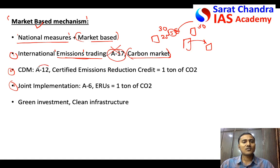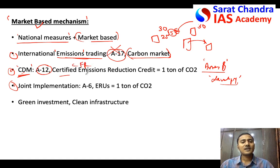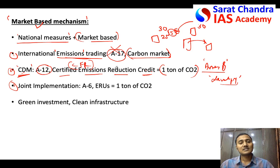Article 12 of the Kyoto Protocol establishes the Clean Development Mechanism (CDM). An Annex B country can develop clean technology or low-emission projects in developing countries — for example, the USA can build clean power plants in India. The reason to do this is to earn Certified Emission Reduction (CER) credits, where each credit equals one ton of CO₂. These CER credits allow the Annex B country to emit that much more in its own country, effectively offsetting emissions globally.